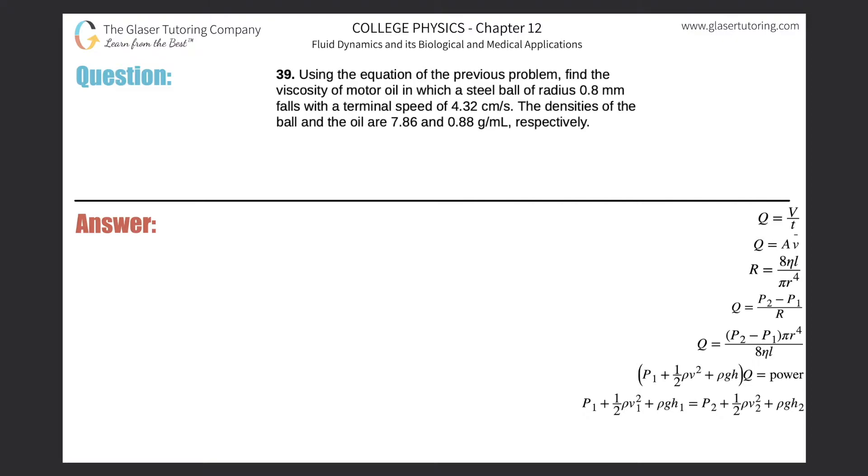Number 39. Using the equation of the previous problem, find the viscosity of motor oil in which a steel ball of radius 0.8 millimeters falls with a terminal speed of 4.32 centimeters per second. The densities of the ball and oil are 7.86 and 0.88 grams per milliliter respectively.